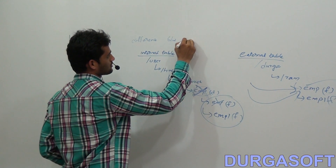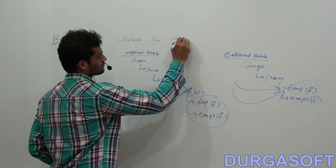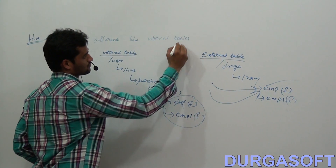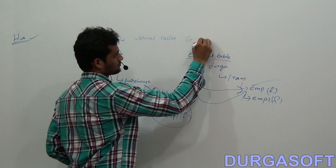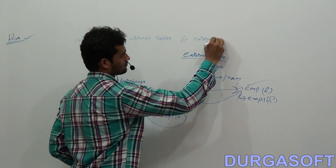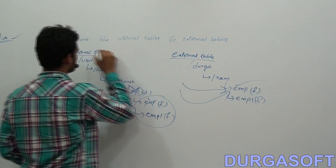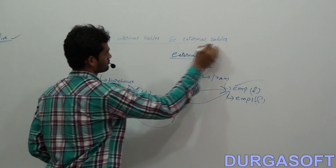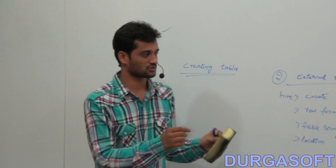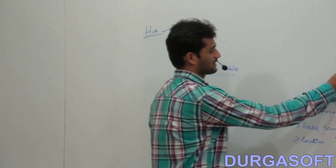Let's look at the difference between internal tables and external tables. I'll take one small diagram to find the difference.